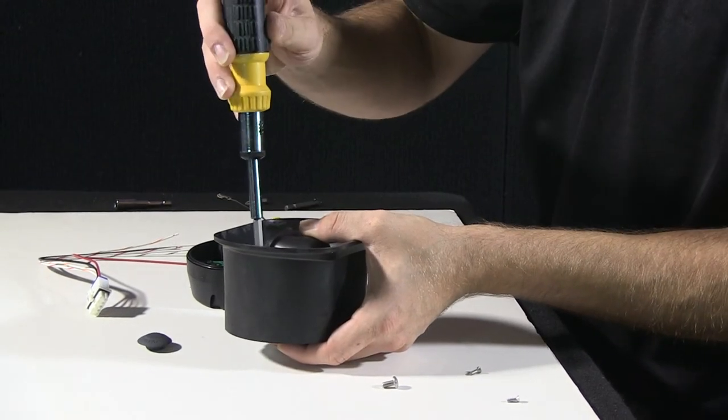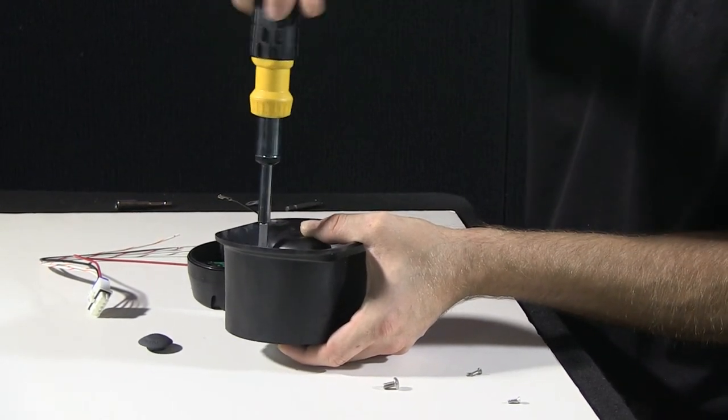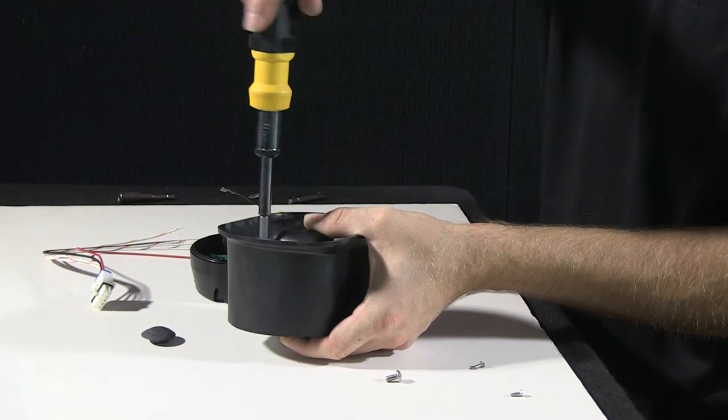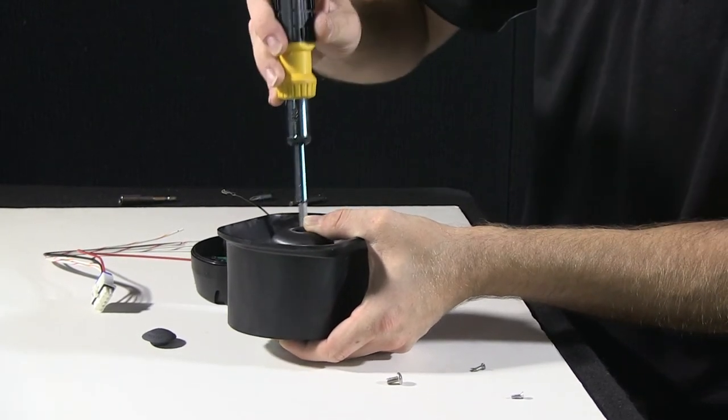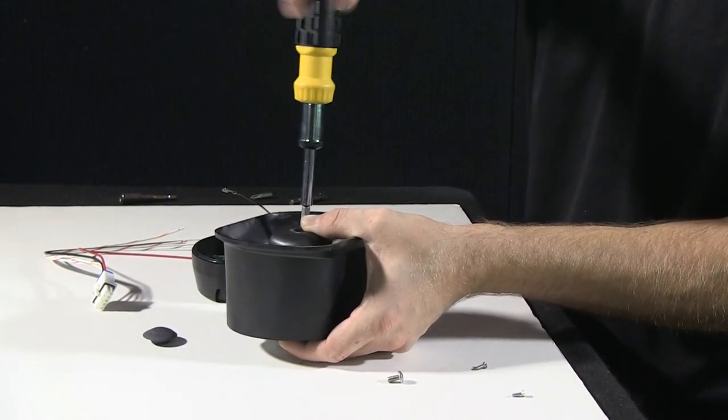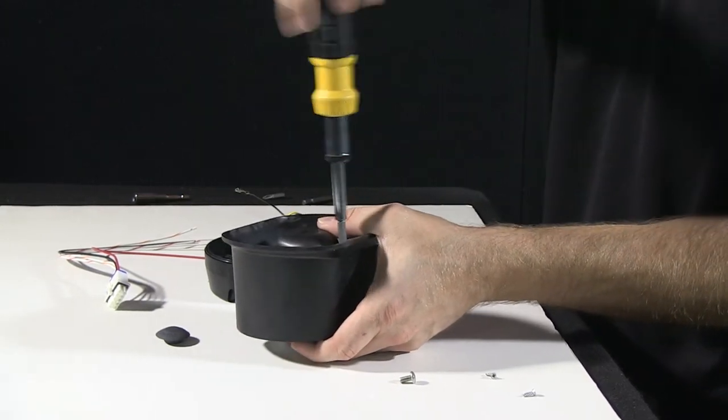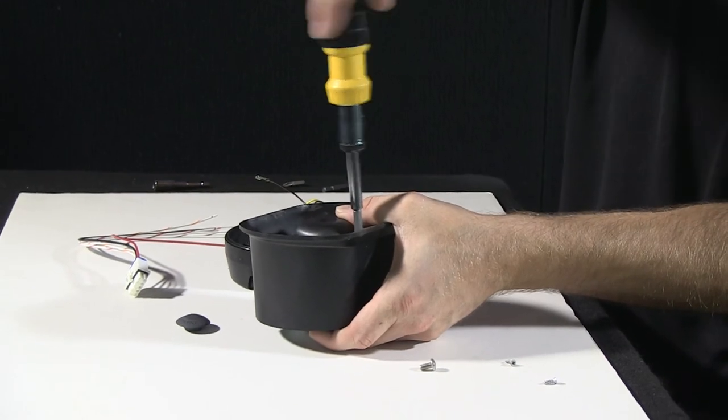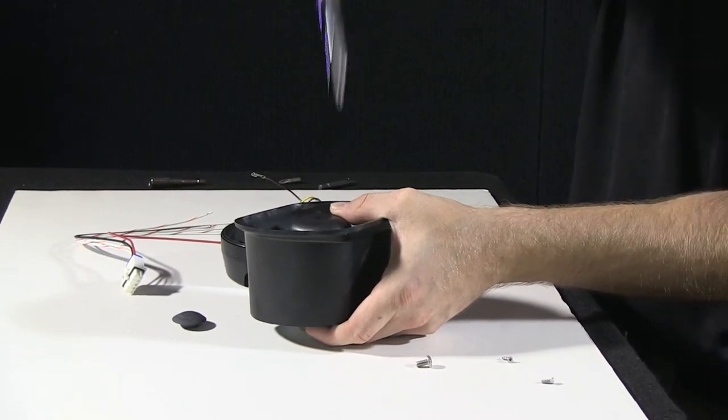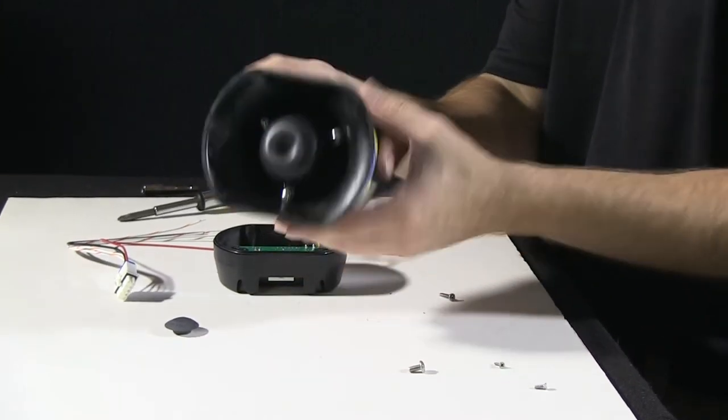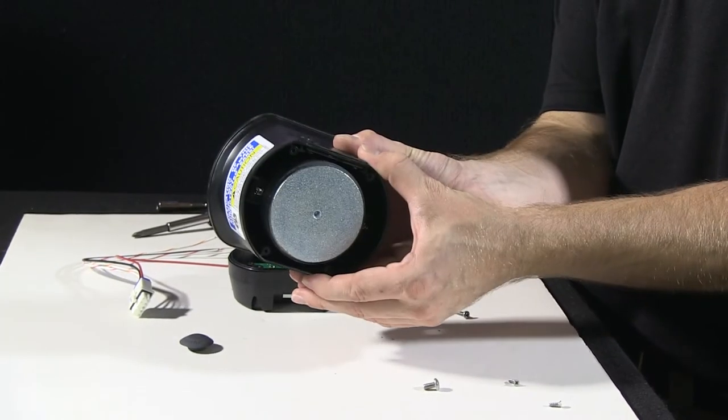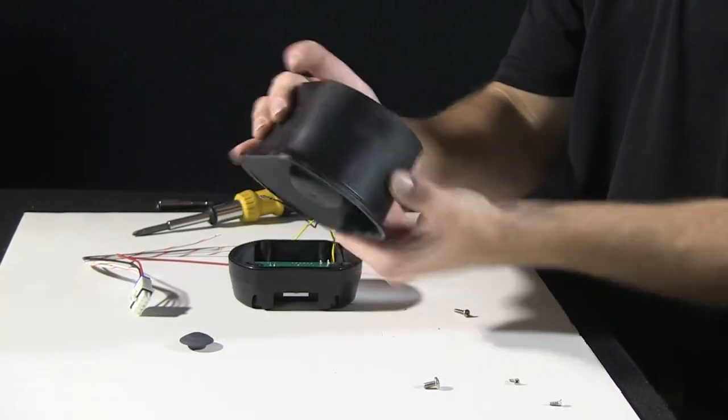Take the three long screws. Go ahead, drop those in. Tighten down the last screw there. So you can basically see the speaker portion is now reassembled.